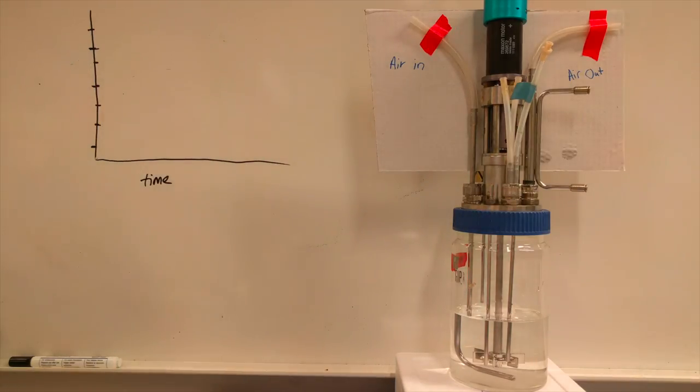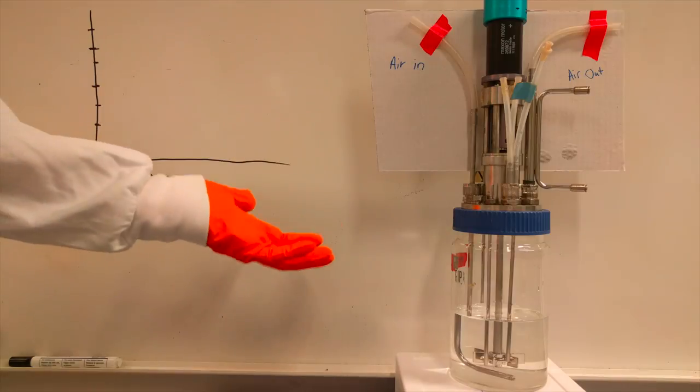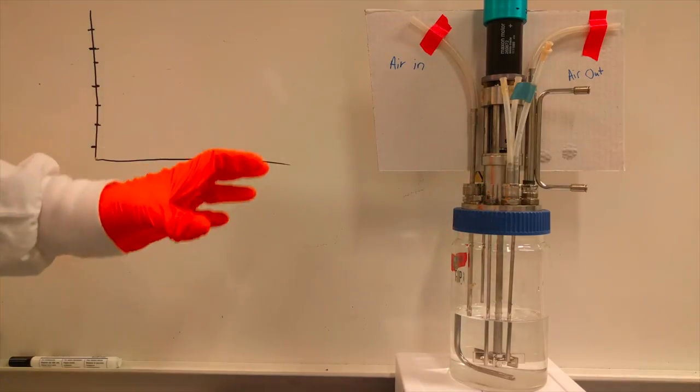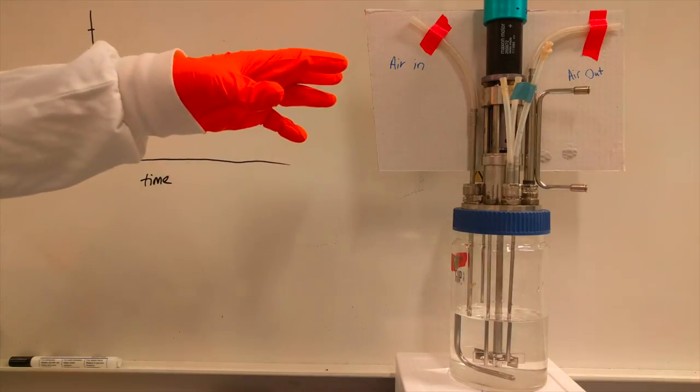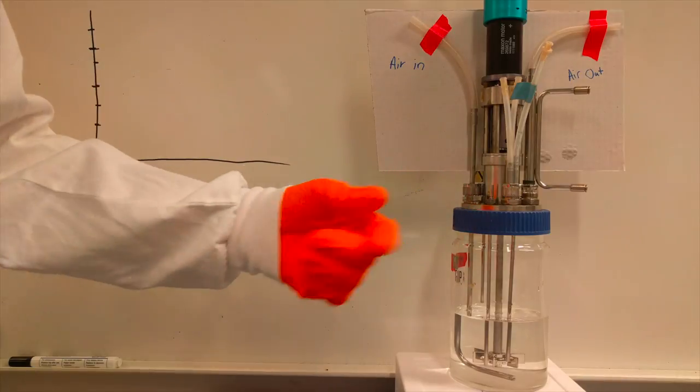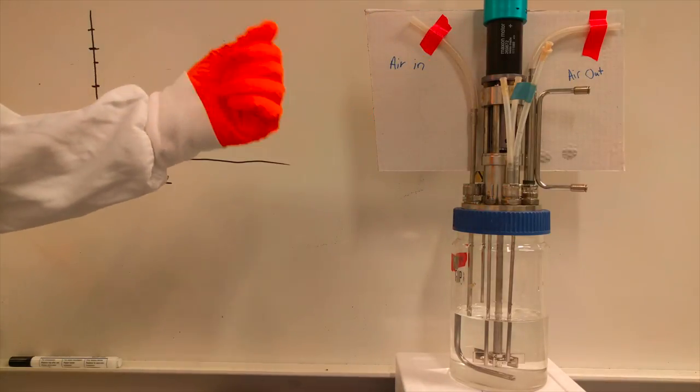What we didn't talk about so much before is the air coming out of the reactor. Not only do we need to let air out, because it is going to be an airtight system when we're done constructing it, but we also want to measure that air coming out. We want to measure the speed to make sure that we're not losing and leaking air out of anywhere. But we also want to know the composition of that air.